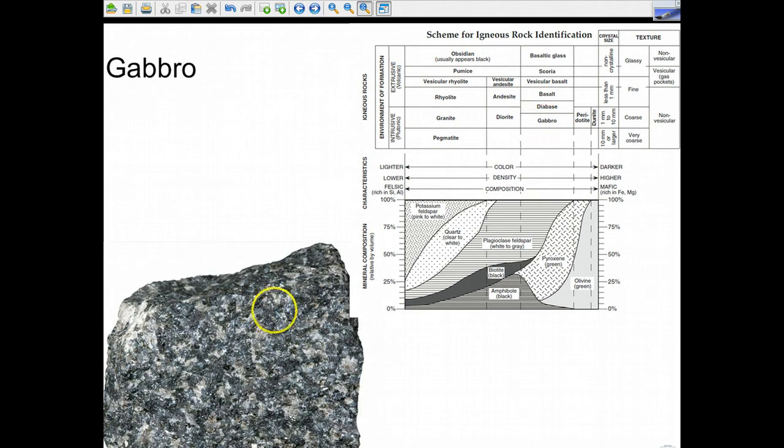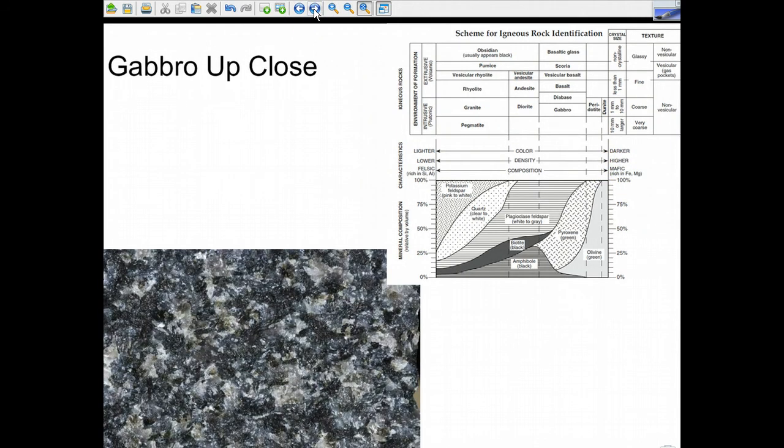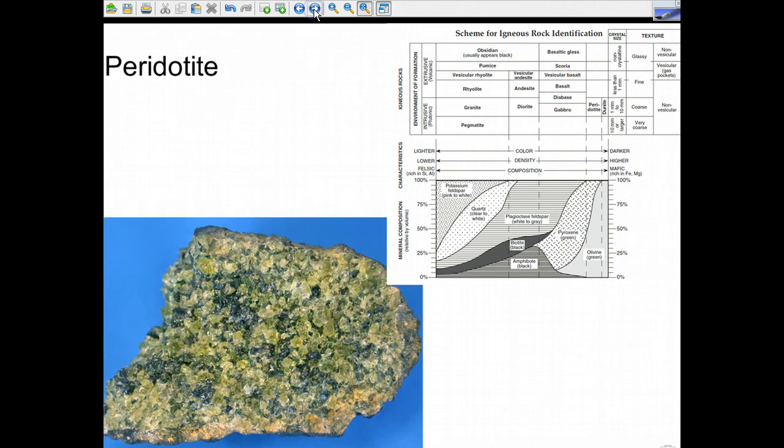Gabbro. Again, look at how much larger the grain crystals are. Now we're into the intrusive section yet again. Again, we're on the darker side. These would be higher in density. And mafic, rich in iron and magnesium. And that's the Gabbro close-up. Look how big those grains are.